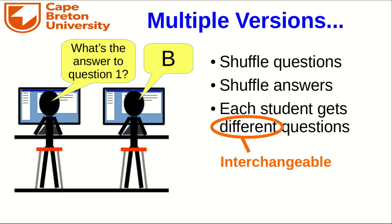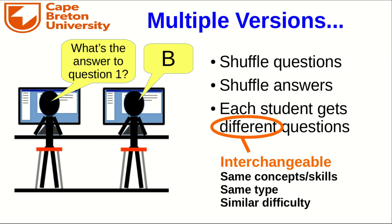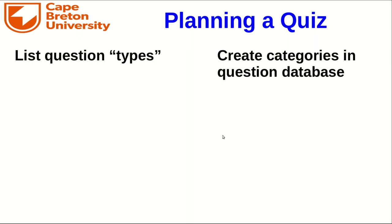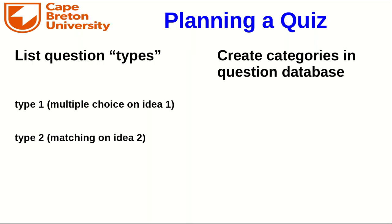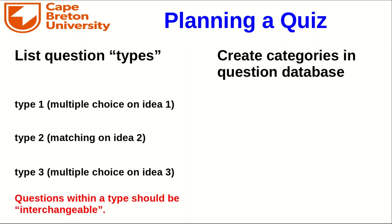Different but interchangeable — in other words, they should test the same concepts and skills, they should be probably of the same type, and as much as you can manage, they should have similar difficulty. The quiz tool makes it quite easy to implement multiple versions of your quiz. You want to list some question types — say, a set of multiple choice questions testing one idea, and then maybe a matching question testing another idea — where within each type, the questions are interchangeable.